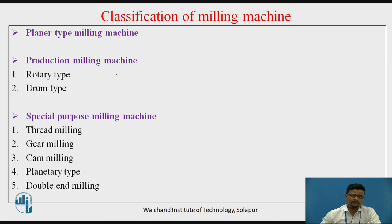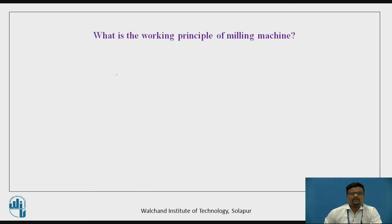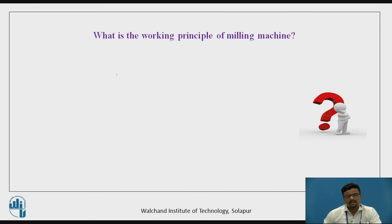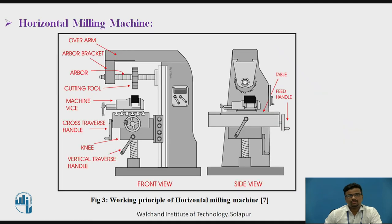Now there is a question for you — listen carefully: what is the working principle of the milling machine? Think about this and be ready with your answer. As we have discussed, it consists of a work piece mounted on the work table, and the milling cutter — the cutting tool of the milling machine — mounted on the arbor. That is the working principle of the milling machine.